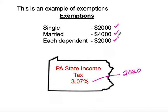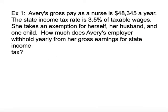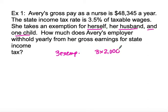Again, exemptions are based off of a yearly income. Here is a situation: Avery's gross pay as a nurse is $48,345 a year. The state income tax rate is three and a half percent of her taxable wages, and she takes an exemption for herself, her husband, and one child — that's three exemptions. How much does Avery's employer withhold yearly from her gross earnings for state income tax?